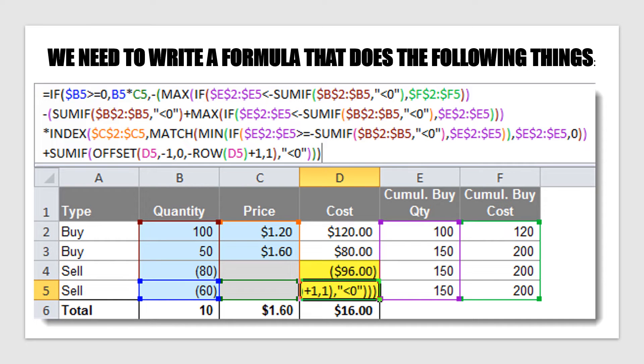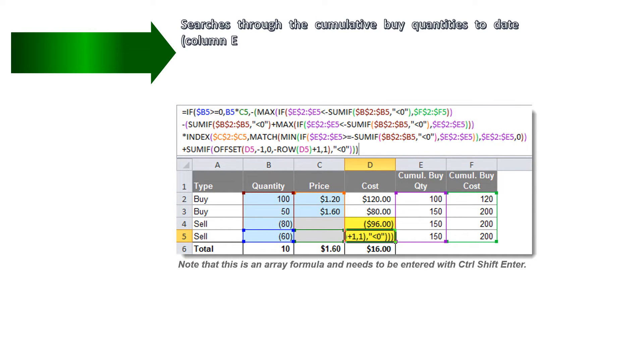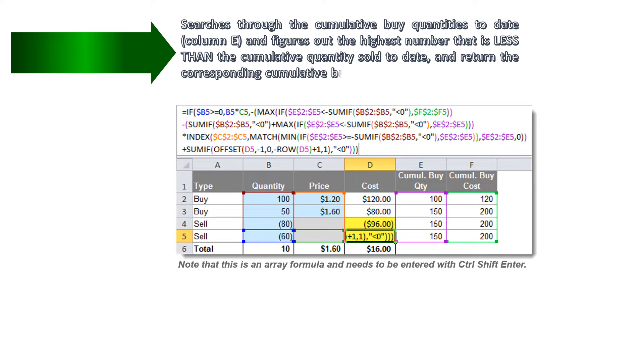We need to write a formula that does the following things. Firstly, searches through the cumulative buy quantities to date, column E, and figures out the highest number that is less than the cumulative quantity sold to date, and return the corresponding cumulative buy cost to date, column F. We need the full amount of this bucket of costs.